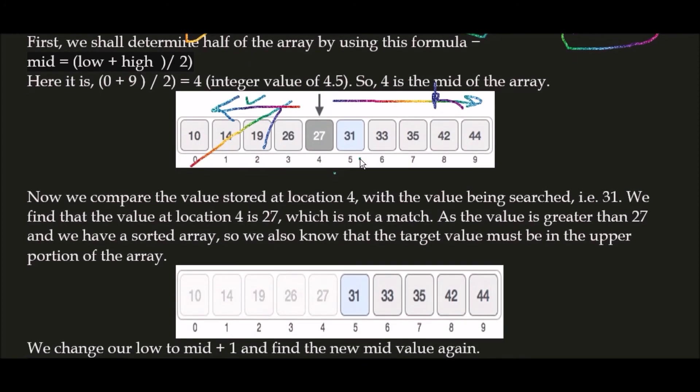Now your new array index is 5 to index 9. We calculate the new mid value of this array: 5 plus 9 divided by 2, which equals 7.